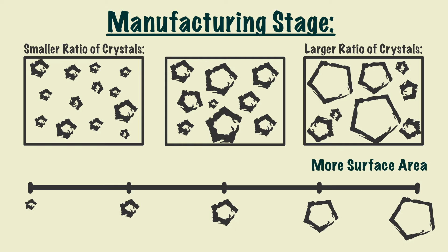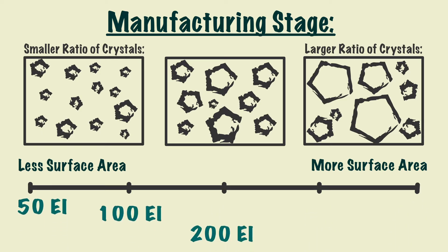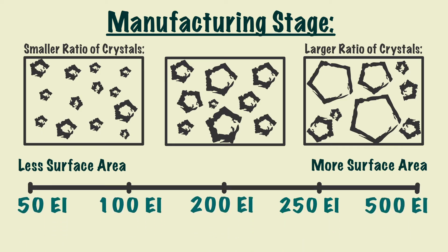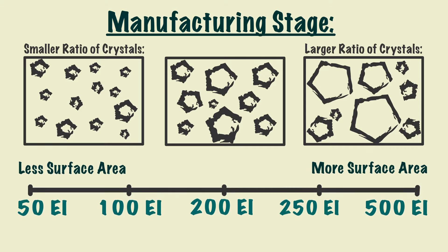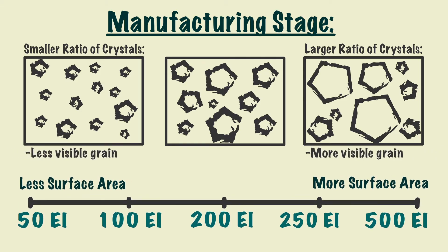Larger crystals have more surface area to capture light than smaller crystals. Therefore, by adjusting the sizes of the crystals, you adjust the exposure index. The higher the exposure index, the larger the crystals are. However, the larger the crystals are, the more visible the grain is. This is why faster stock appears to have grainier footage.